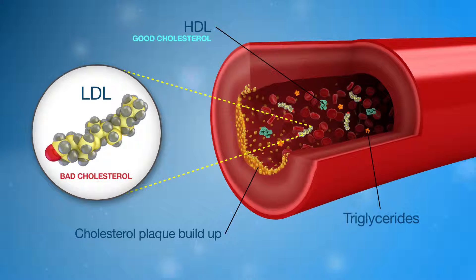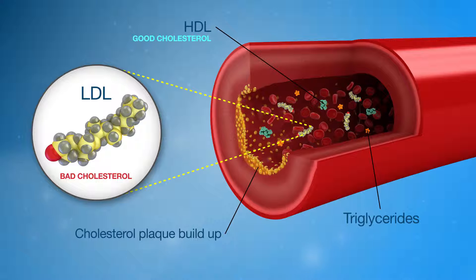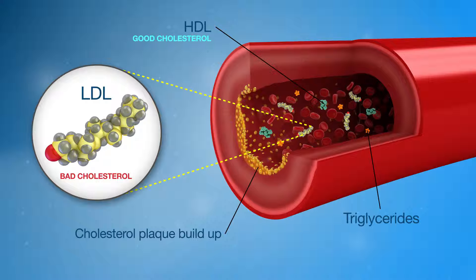Triglycerides are another type of fat in our bloodstream. Excess kilojoules from food, alcohol or sugar in your body are converted into triglycerides and stored in fat cells. Triglycerides can enter the blood vessels and speed up the formation of plaque deposits.